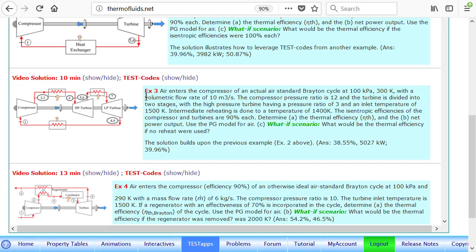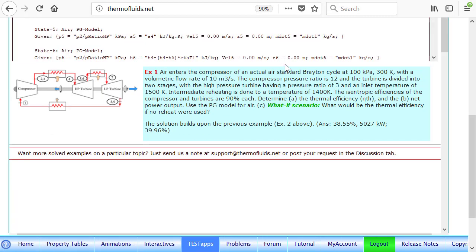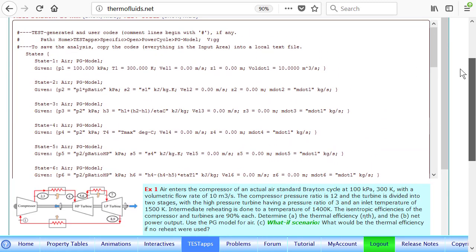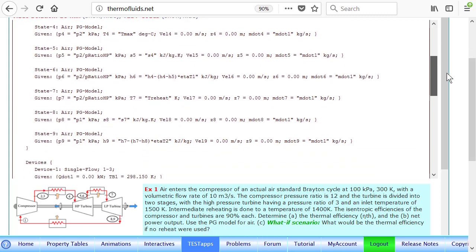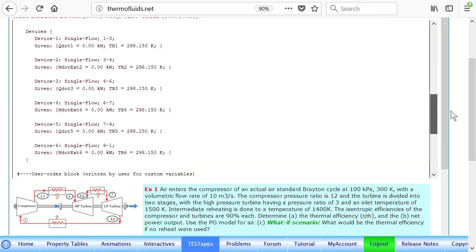Let's say example 3. Here is the test code for this problem. You can see that in the beginning of the test codes, all the states are defined here. There are altogether nine states and there are six devices, as you can see.